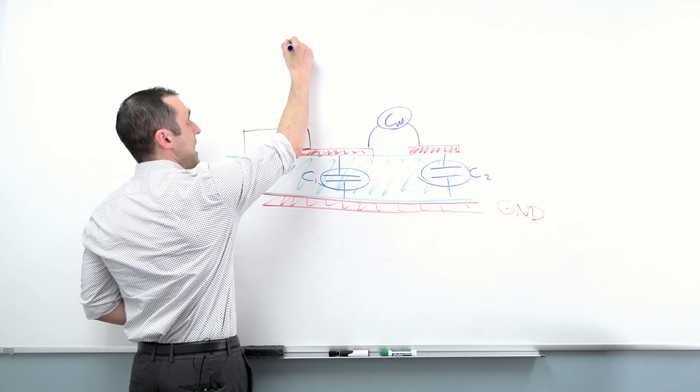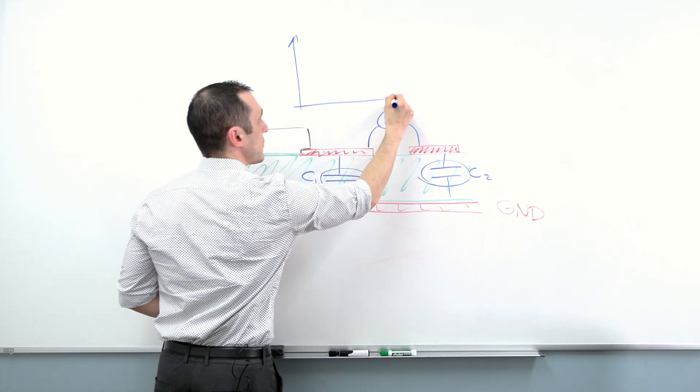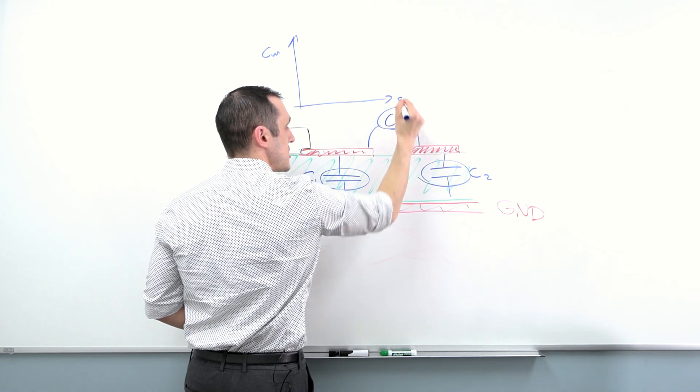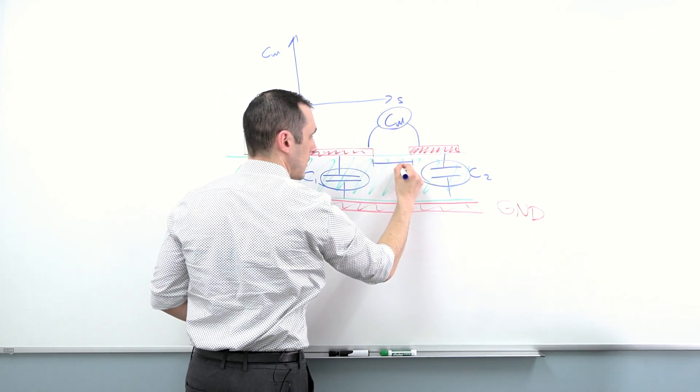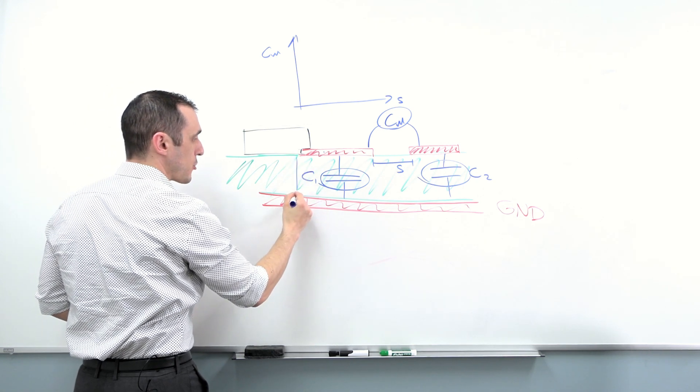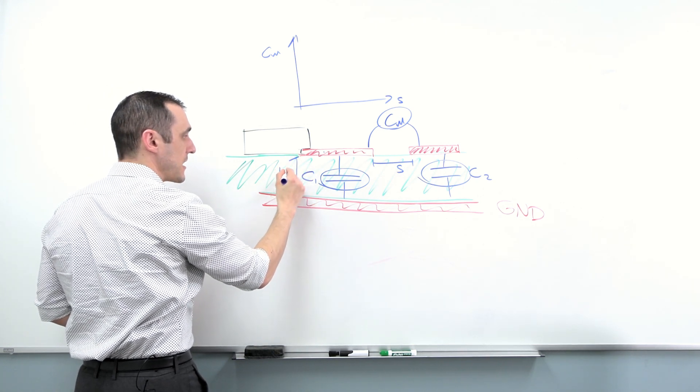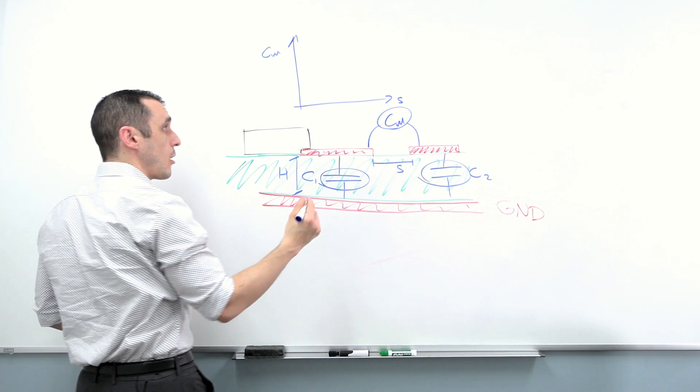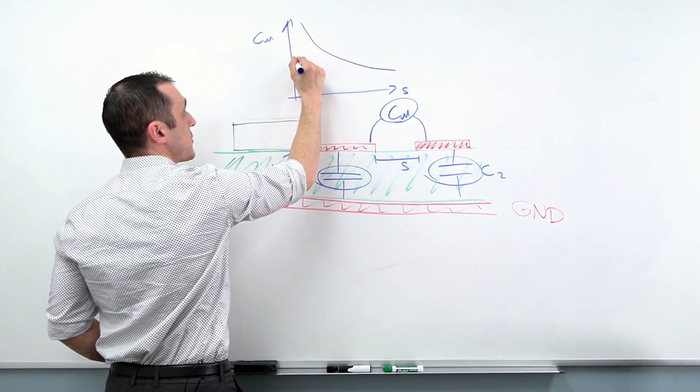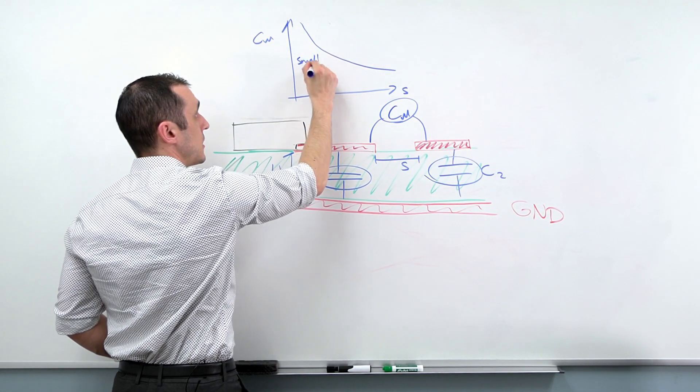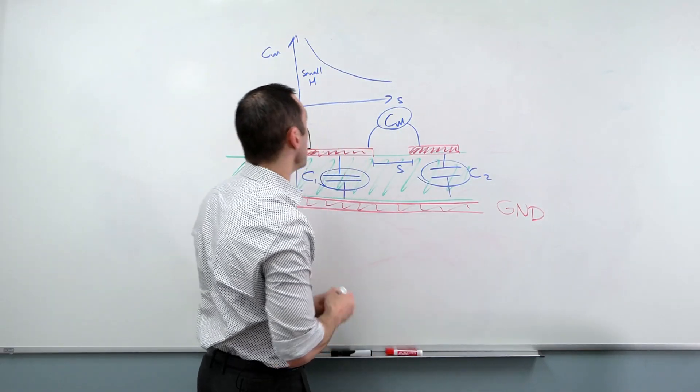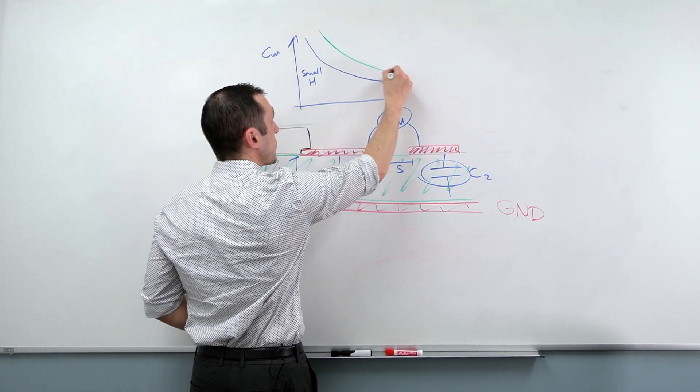So with this C sub M value, if we actually take that and draw a graph and we plot this as a function of spacing between the traces and then we parameterize that as a function of height from the ground plane, what we'll actually get is we'll get something that looks like this. So this is what I would get with a small H value. Now, if I have a large H value, I'll get something that looks like the green curve.